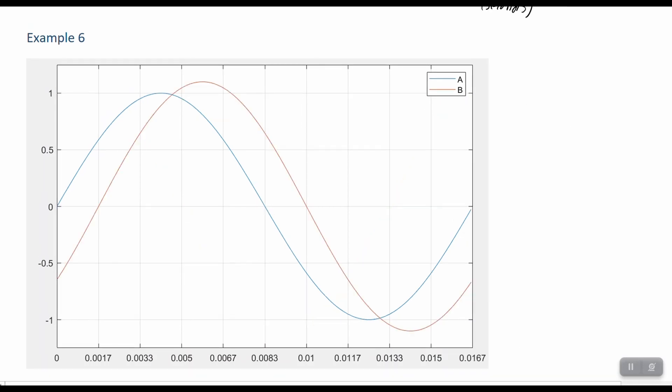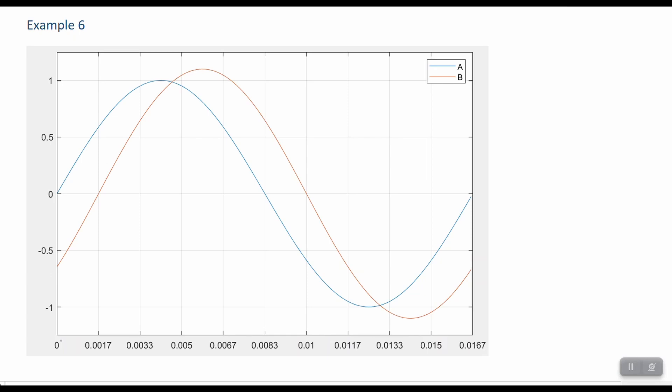Now I've got one more example, example six here. And we can see that a full cycle, if we look at what a full cycle on this one is, again, along the bottom here, this is in time and seconds. And one full cycle is 0.016 seconds, 0.0167 seconds. And I chose this because this is a 60 hertz signal.